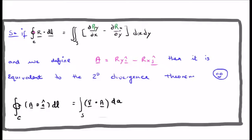So, how do we put it together? If we have a vector field R, and we put it into Green's theorem, r dot dl, the closed line integral, is equal to the surface integral of del r sub y del x minus del r sub x del y.